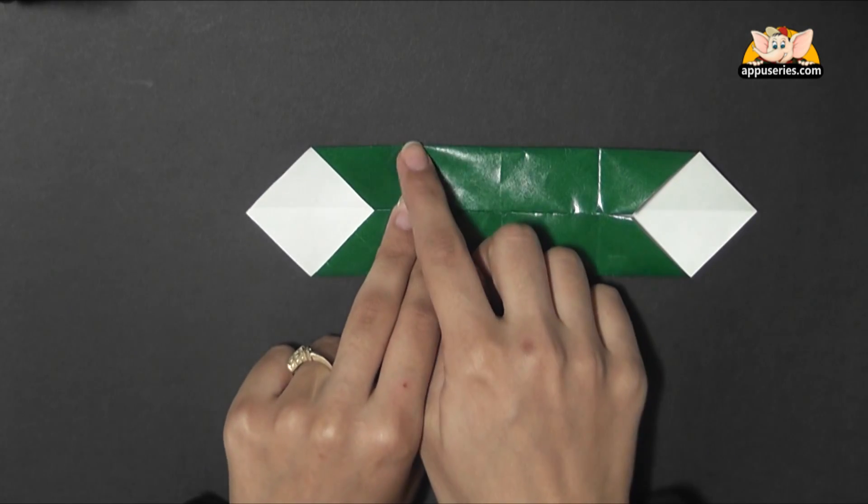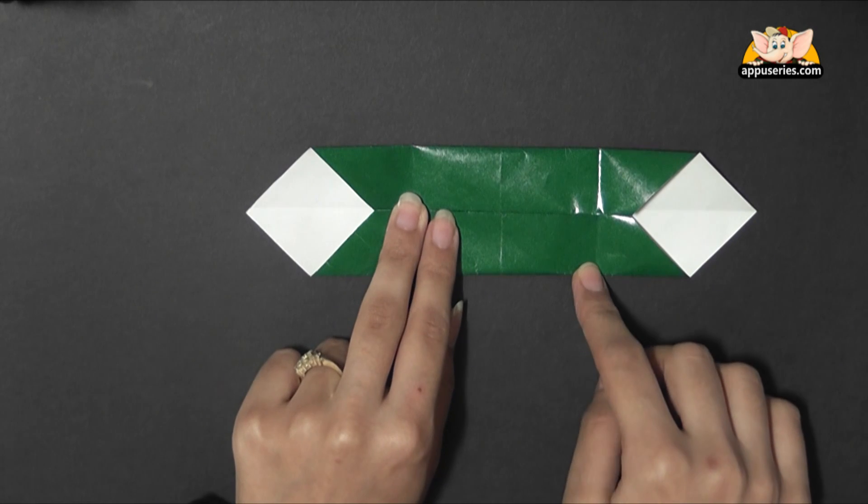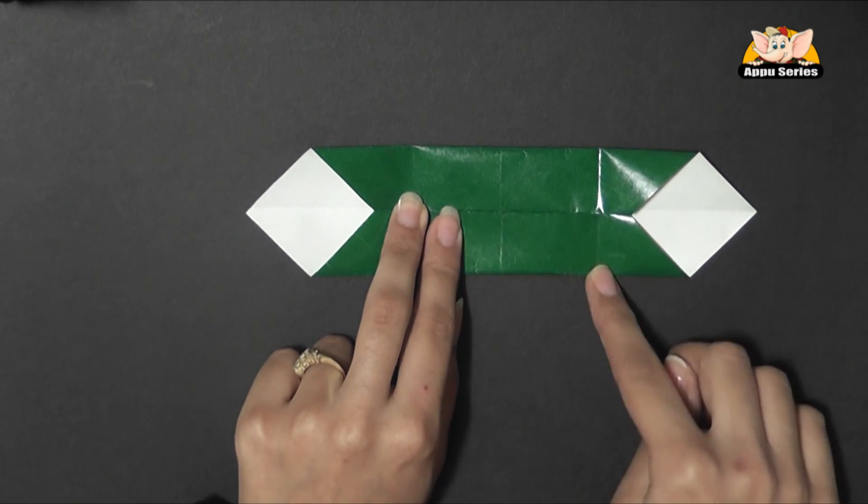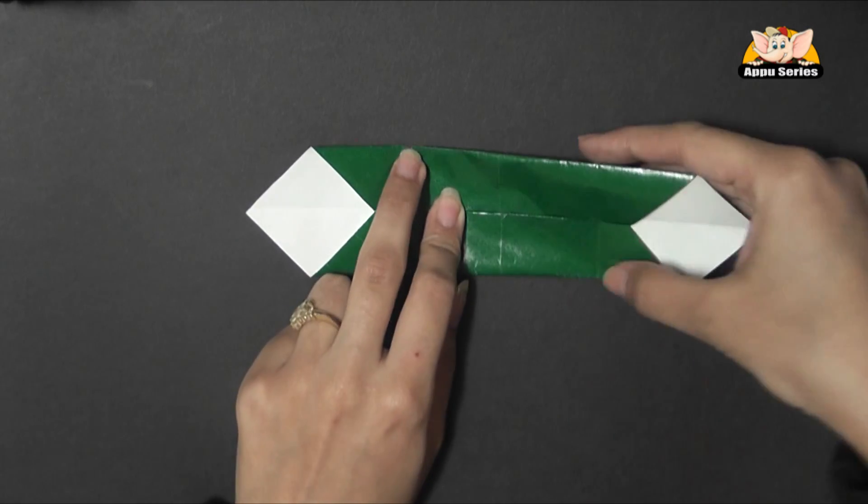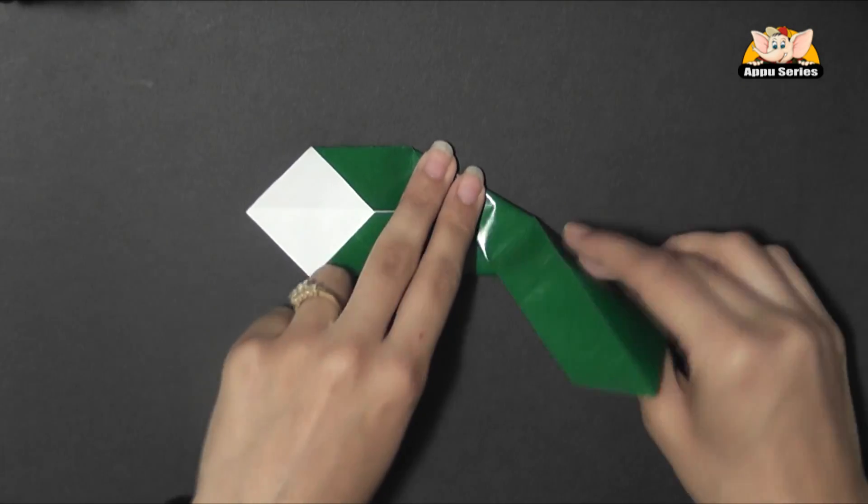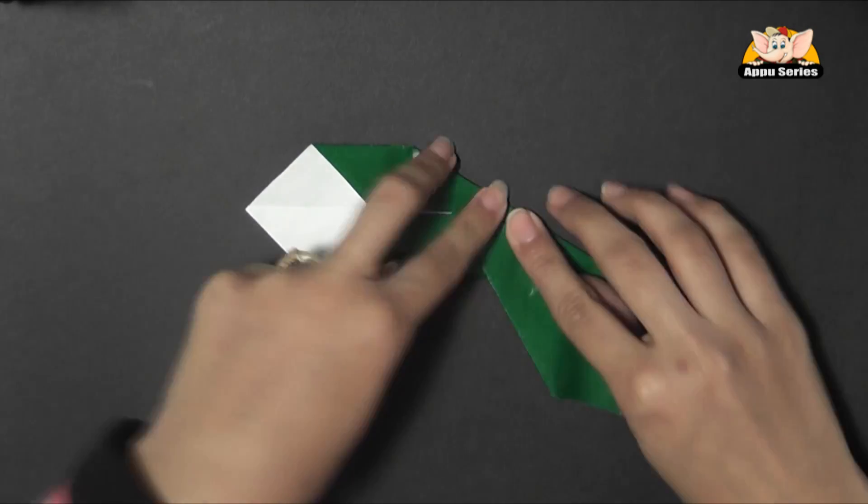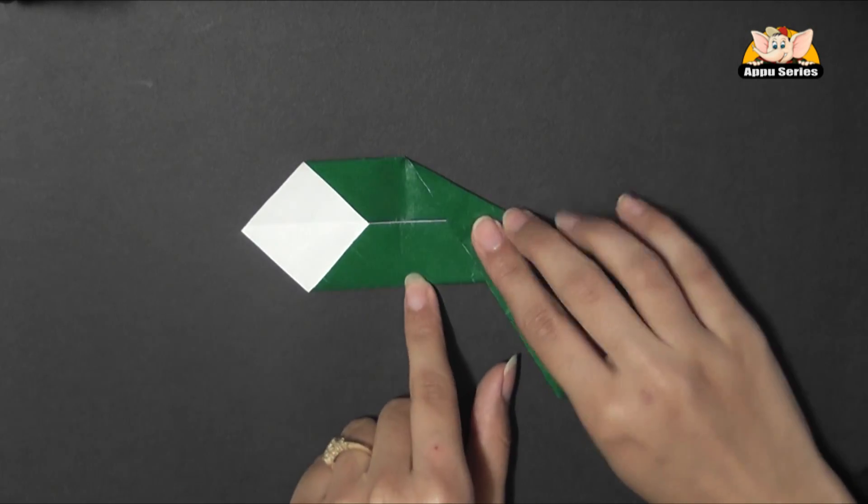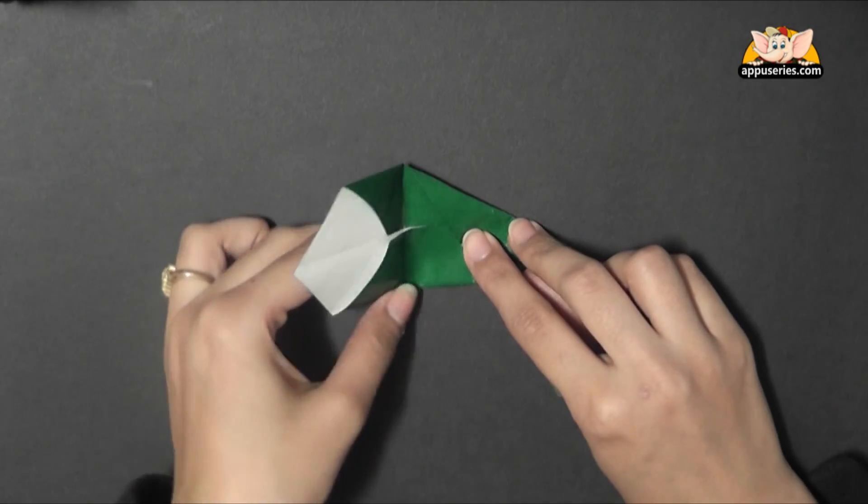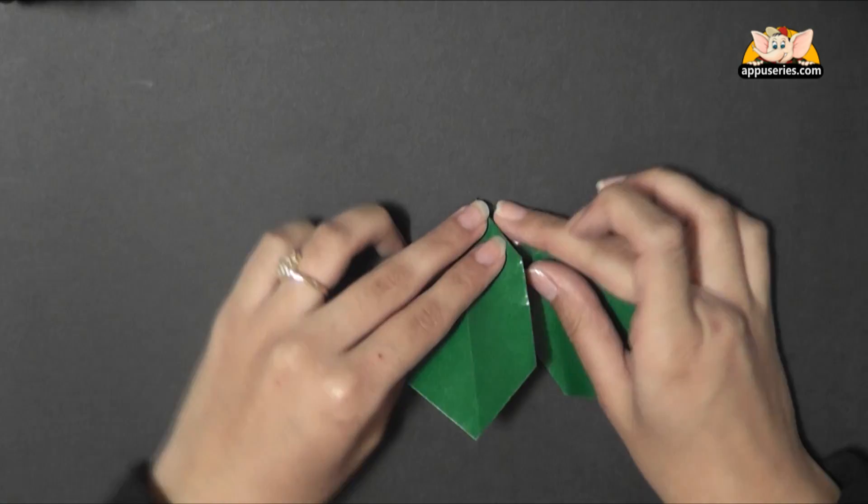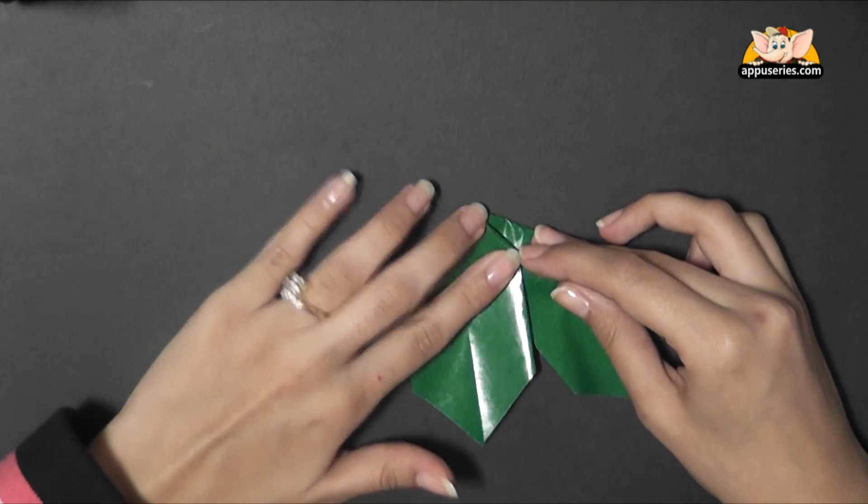We will do the same for the right side. Now we are going to make a crease this way, starting from this point till here. Fold this down. And now using this point we are going to fold it down again.